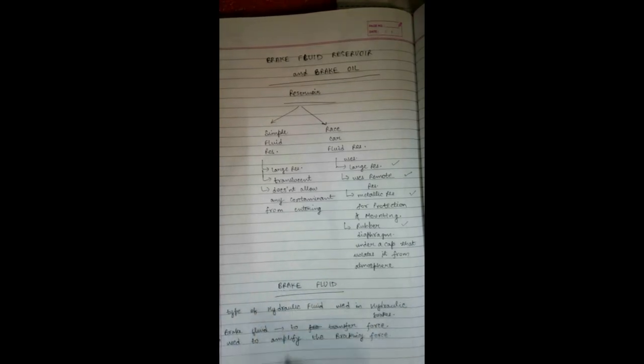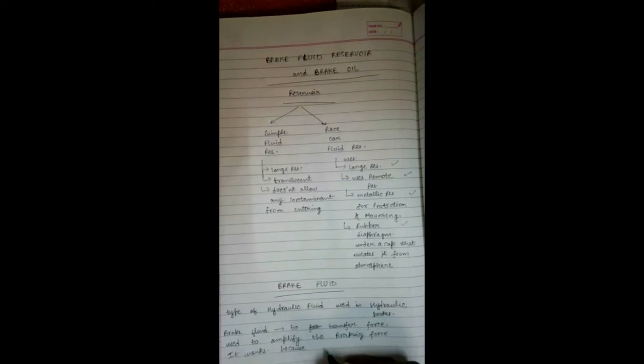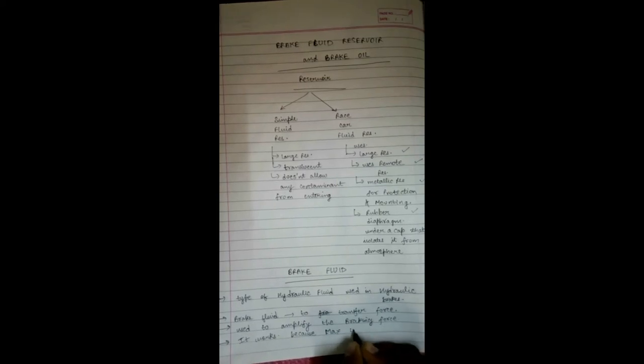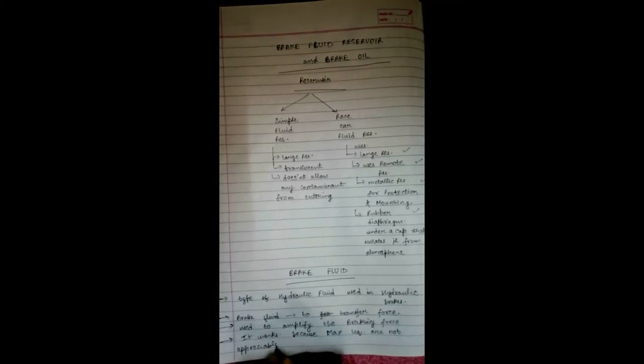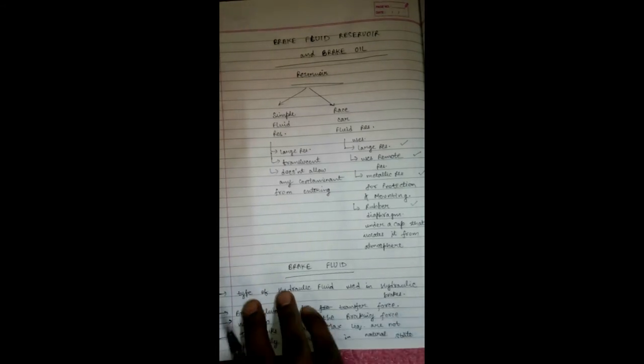A main property of brake fluid is that it works because most liquids in their natural state are incompressible. Since they are incompressible, they are able to apply pressure from one component of the vehicle to another and transmit force. Maximum liquids are not appreciably compressible in their natural state because the component molecules do not have internal voids and the molecules pack together strongly.